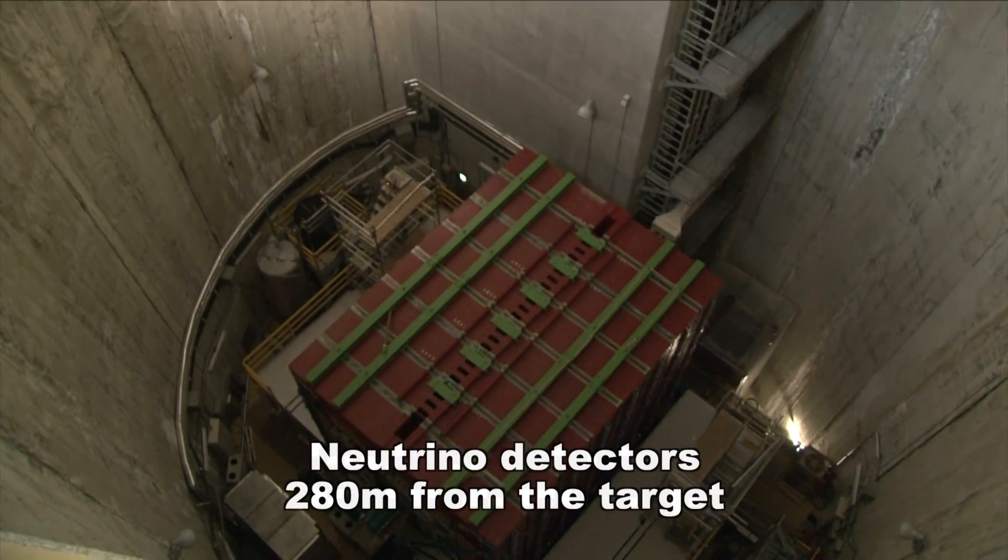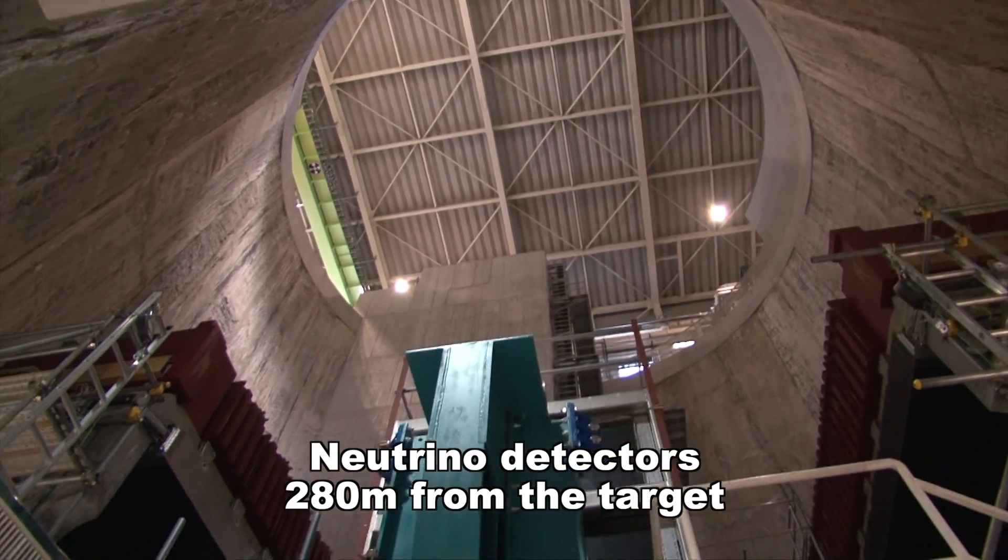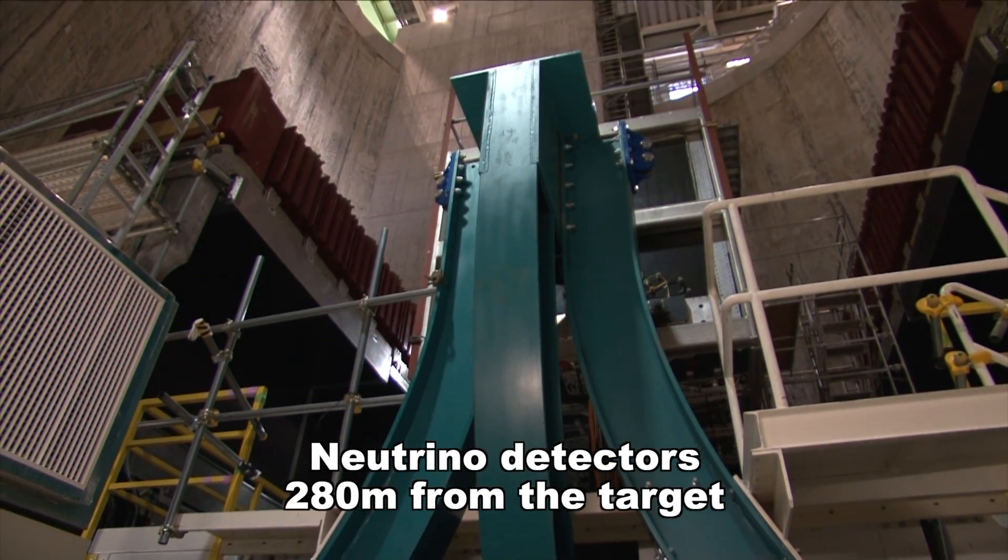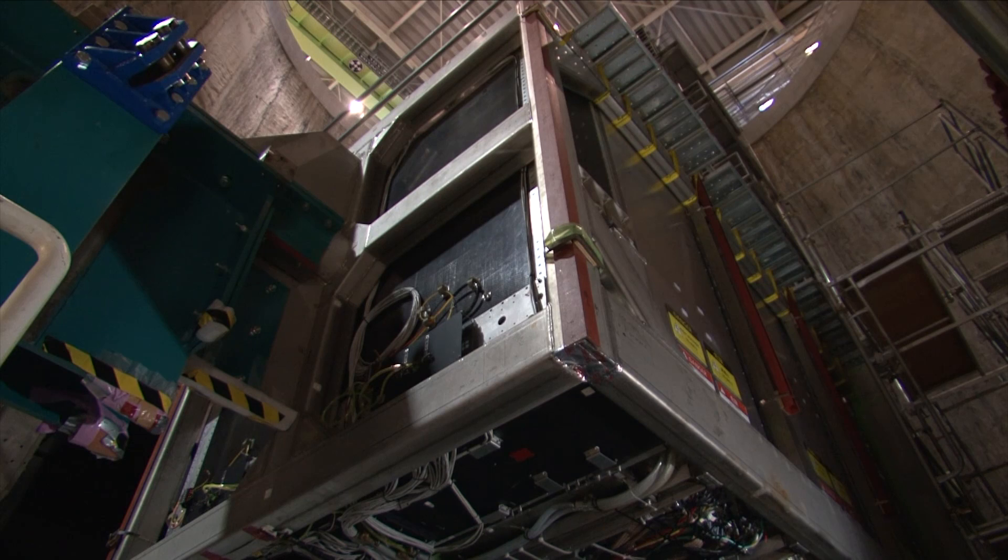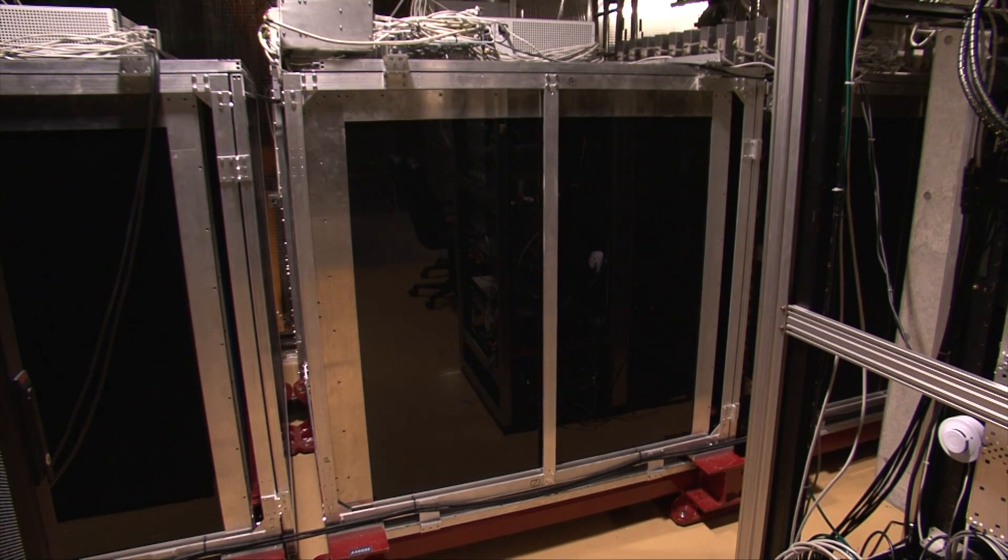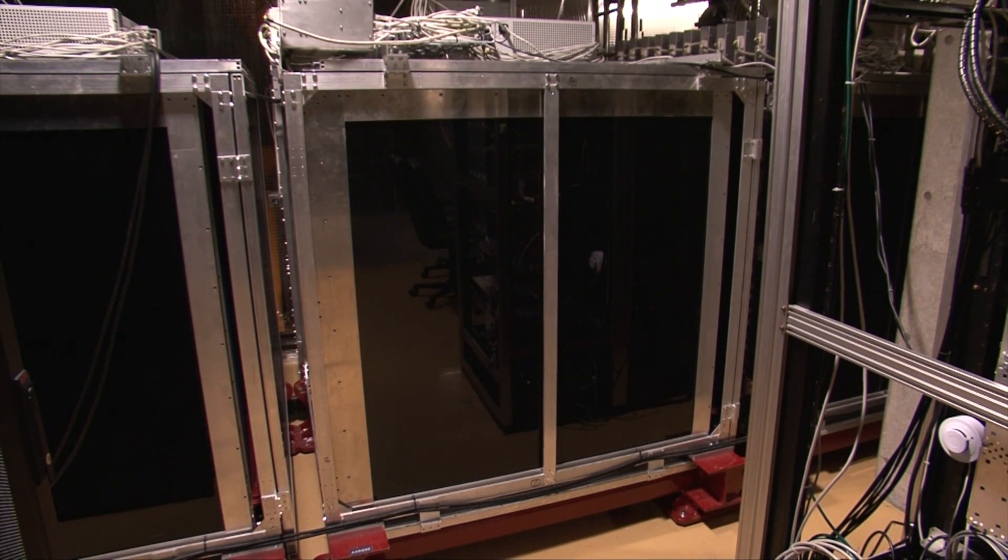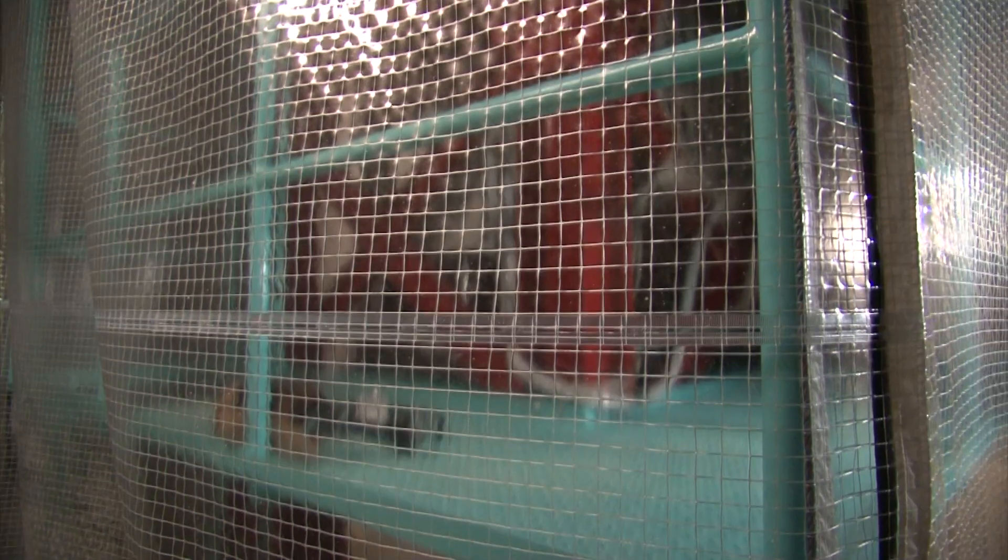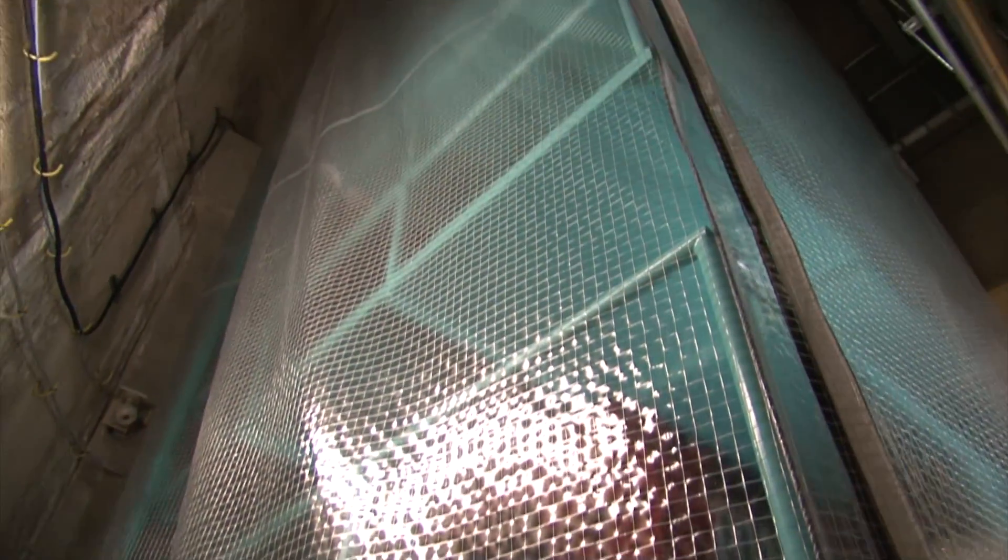The first set of neutrino detectors is situated 280 meters downstream of the target. These detectors can measure the energies of the neutrinos, the purity of the beam, and its stability. The measurement of neutrinos just after their production allows a detailed comparison to be made once they have completed their journey across Japan.